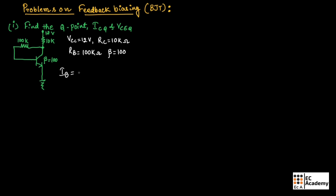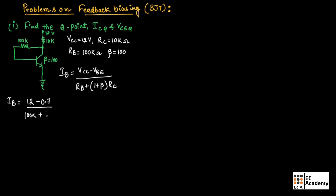To find IC at the Q point, first let us find IB, which can be given as VCC minus VBE divided by RB plus (1 plus beta) into RC. Substituting the values, IB equals 12 volts minus 0.7 volts divided by 100 kilo ohm plus 101 into 10 kilo ohm. Solving this, IB is equal to 10.18 micro amperes.